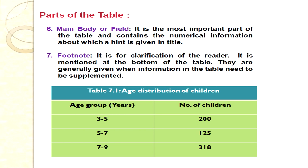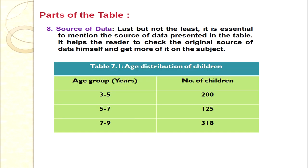The next part is the footnote, written just below the body of the table. Its purpose is for clarification of the reader. For example, if data was collected during a depression, recession, or demonetization period, this should be mentioned in the footnote because the data would vary a lot compared to normal periods. Footnotes are given when information in the table needs to be supplemented.